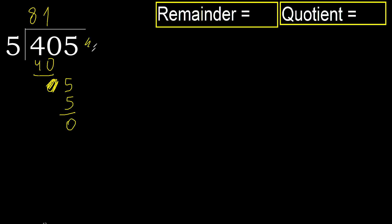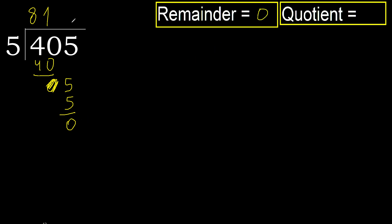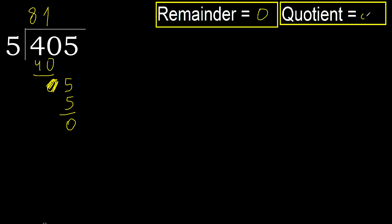There is no next number, therefore finish it. 405 divided by 5 is 81.